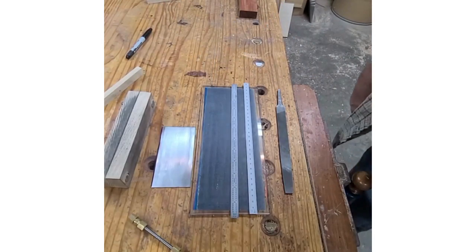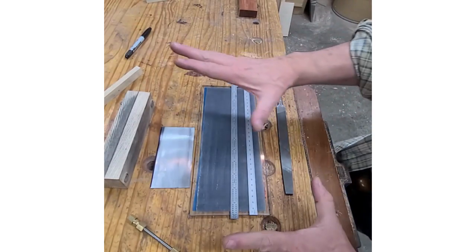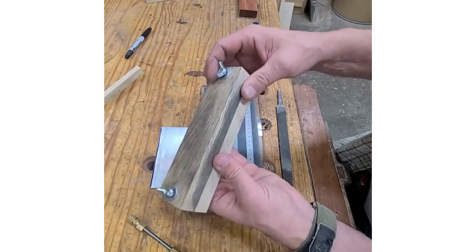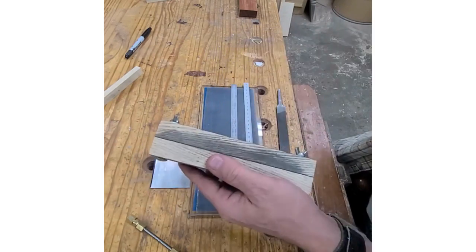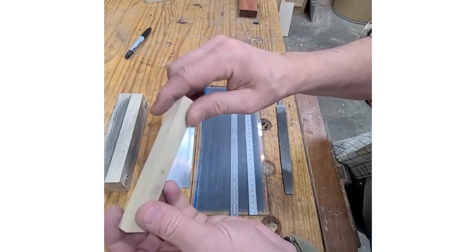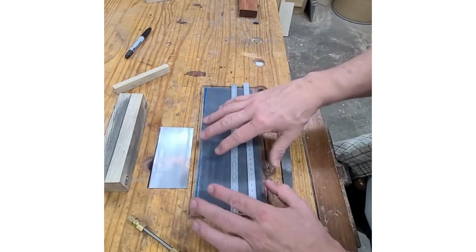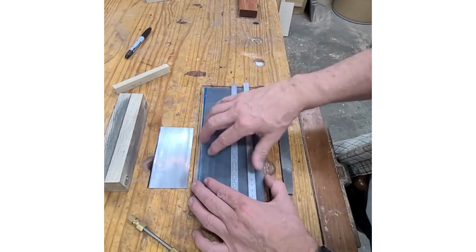Now I'm going to show you how the scraper kit works in real time. Here's all the components of the kit. Here's a scraper vise we made, this is one I made out of ash. Here's a little magnetic handle that we made. Here's a scraper we're going to use. It's brand new so we got to prepare it.